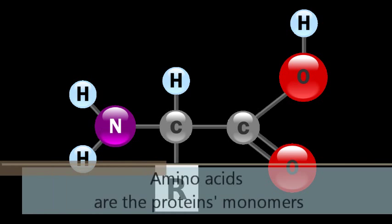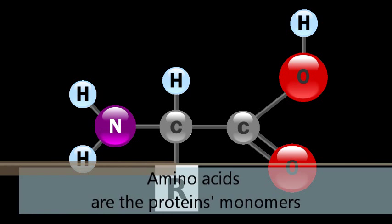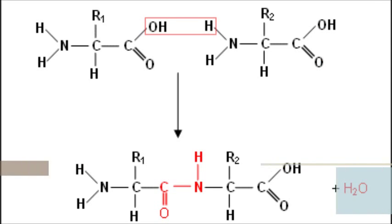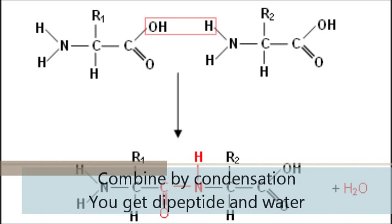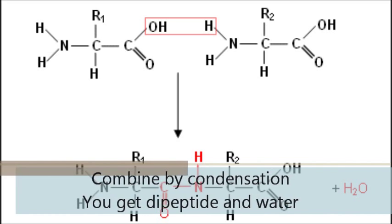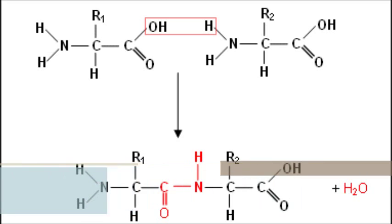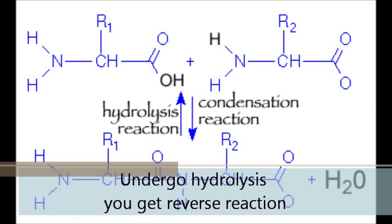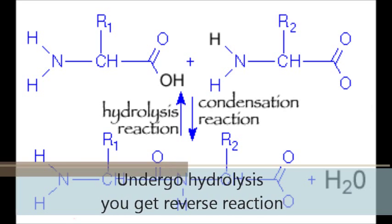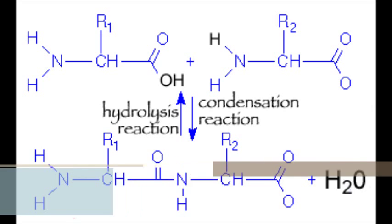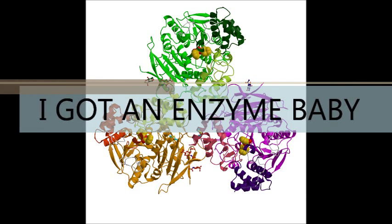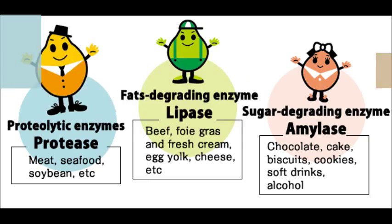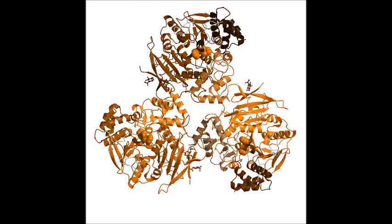Amino acids are the protein monomers. Combined by condensation, you get a dipeptide and water. Undergo hydrolysis and you get the reverse reaction.